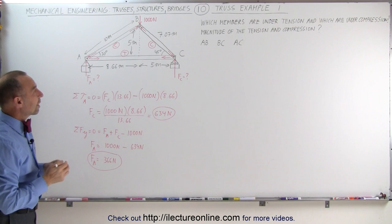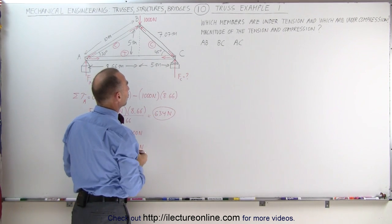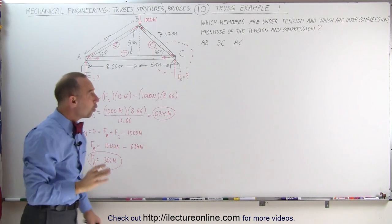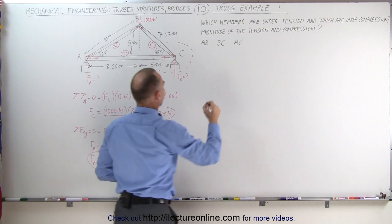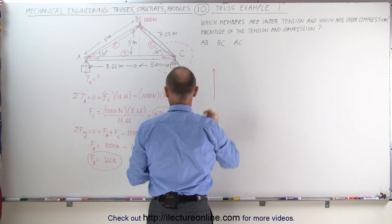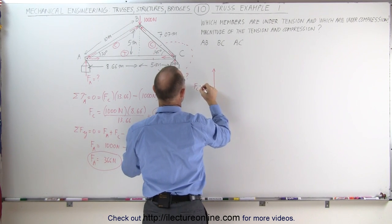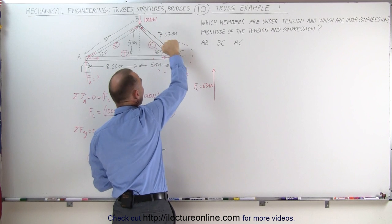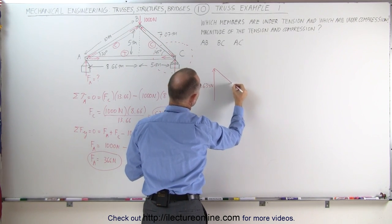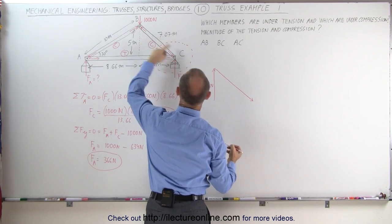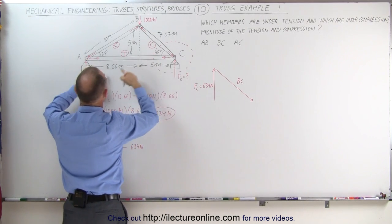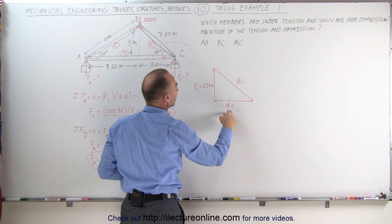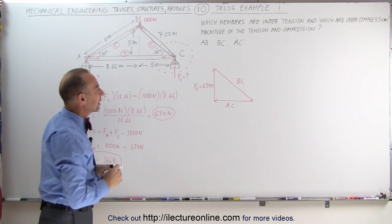The next thing we want to do is find the forces in each member — either compression or tension. We take a look at joint C and draw all three forces acting on that joint. We have F sub C equal to 634 newtons acting upward, the compressive force on member BC pushing against the joint, and the tension force on member AC pulling on the joint. This gives us a force triangle to work with.